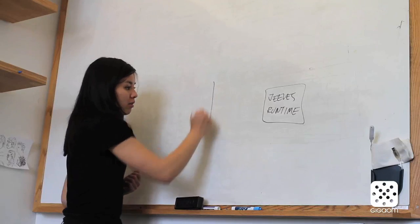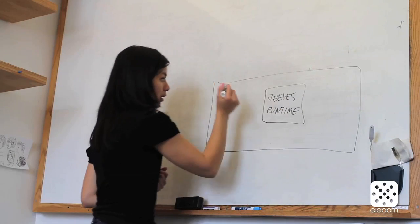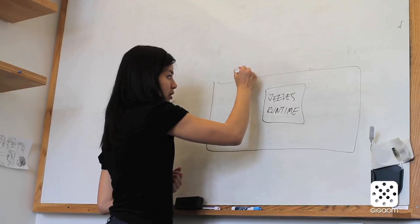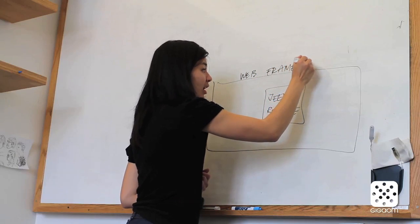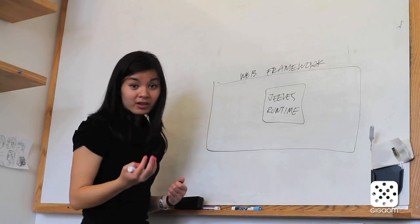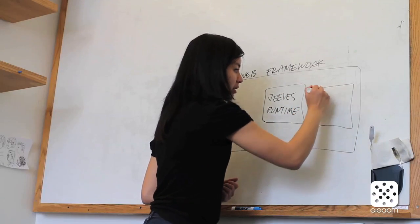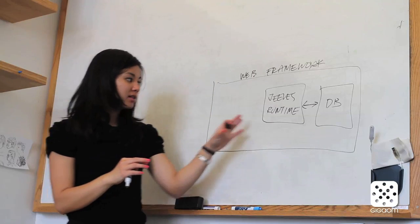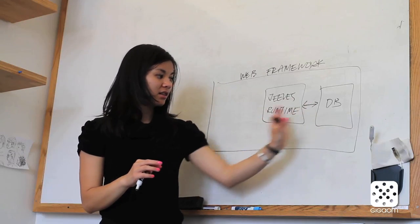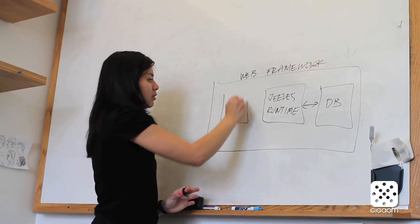And for the rest of my PhD, I want to look at how you can use Jeeves as part of a web framework. Some other crucial components of a web framework are the database, and what I want to look at is how you can extend the guarantees across the database boundary, and also the front end.